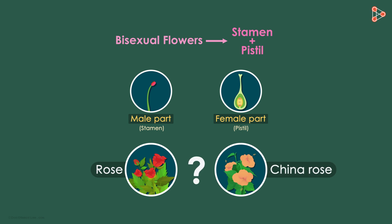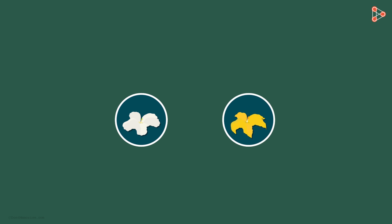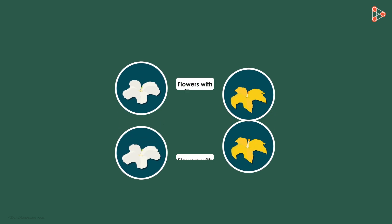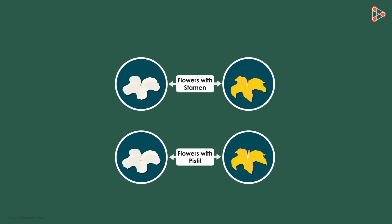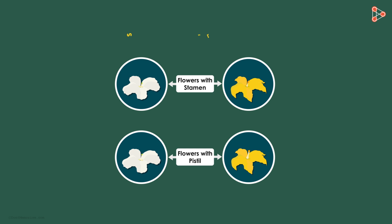What about other flowers then? Don't they contain both the male and the female floral parts together? Some flowers such as those of gourd and pumpkin possess either stamen or pistil. That is the reason why such flowers are called unisexual flowers.